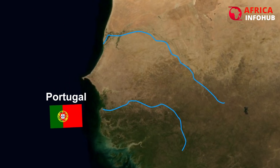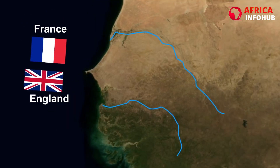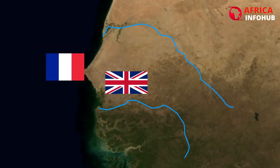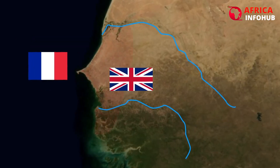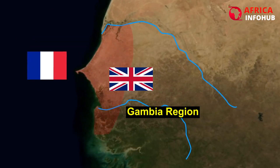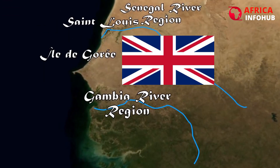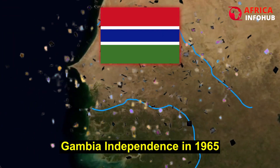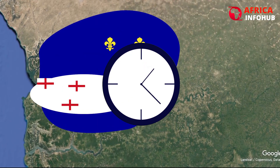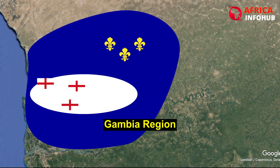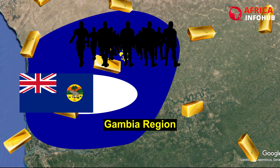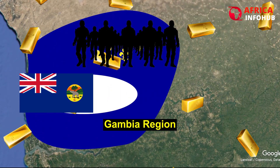The formation of the Gambia is heavily intertwined with the legacy of European colonialism in West Africa. In the late 19th century, the Gambia was designated as a British colony and protectorate, and it remained under British control until its independence in 1965. During this period, the Gambia was shaped by the policies and interests of the British colonial government, which aimed to exploit its resources and maintain political control over the region.